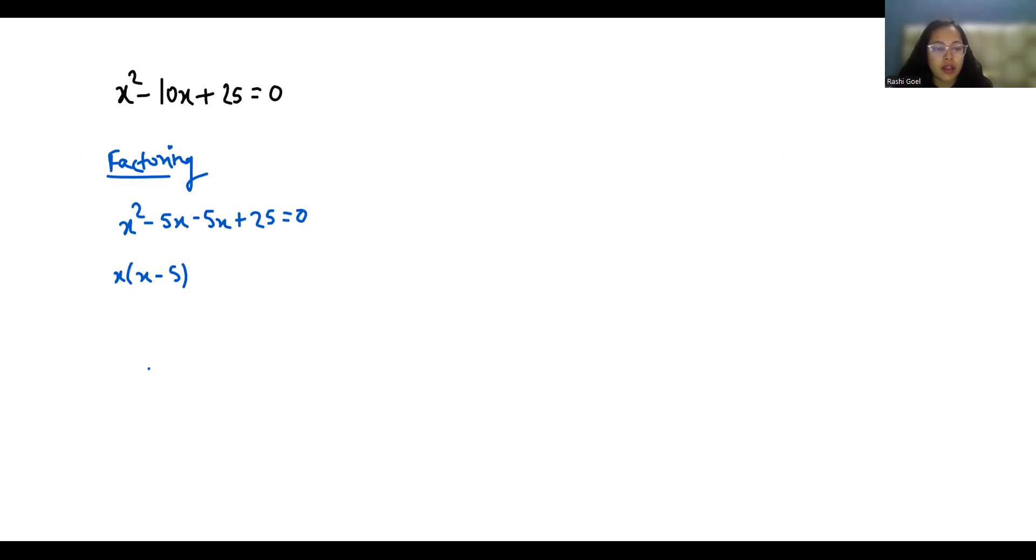We get -5(x - 5) = 0. Now (x - 5) is common, so (x - 5)(x - 5) = 0. To find the solution, we will set each factor equal to 0.